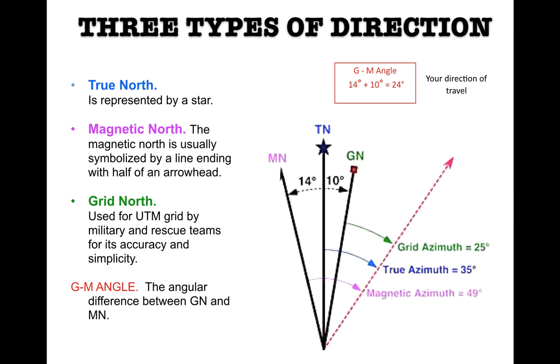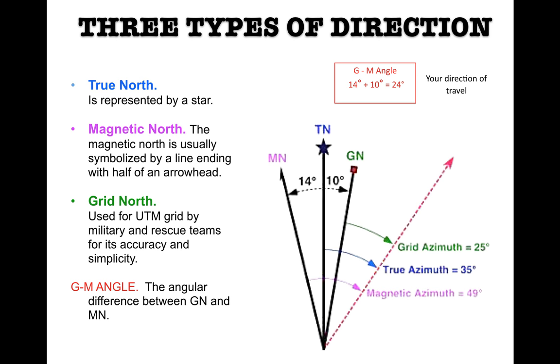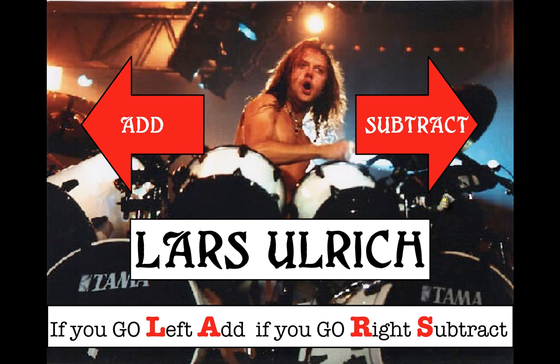So somebody gave you, in this example here, 14 degrees magnetic, how do you convert this to grid? And this picture right here is pretty complicated because this is going from the north. It says 14 degrees to the north, true north, and then 10 degrees to grid. But how do you convert from your magnetic to grid? Well here it is.